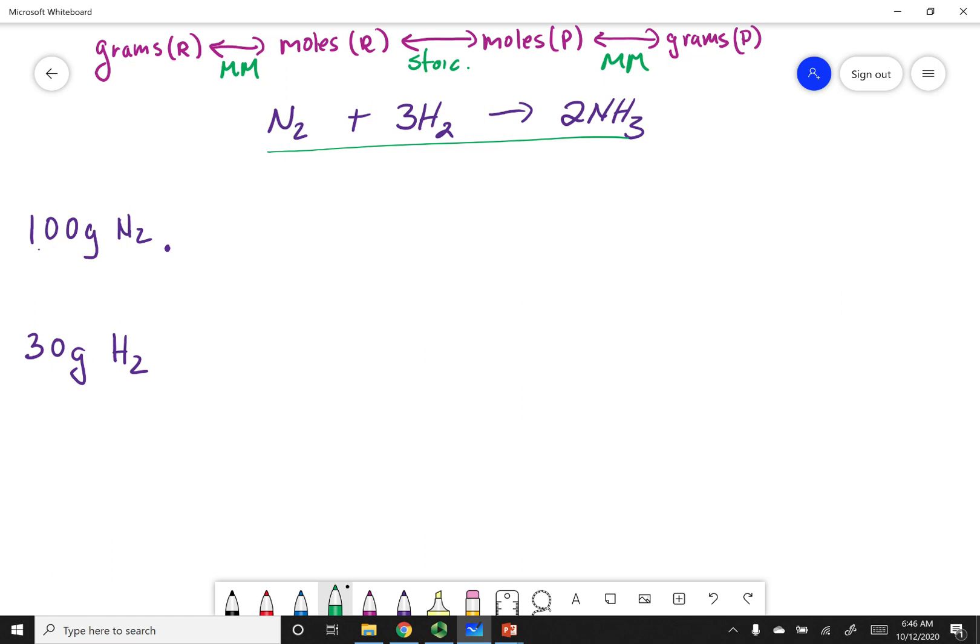Let's do that. I'm starting with grams of reactant and want to get to grams of product. I have 100 grams of nitrogen. If I look at the periodic table, each nitrogen weighs 14.01 grams, and there's two of them in this molecule, so that's the molar mass, grams per one mole of N2.